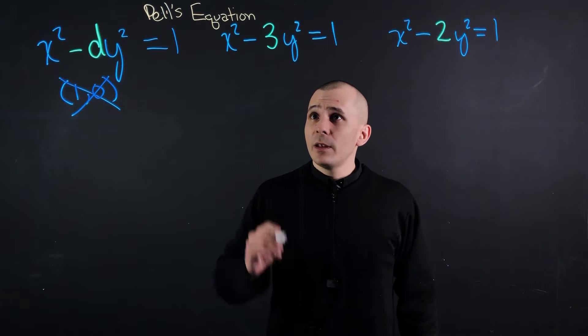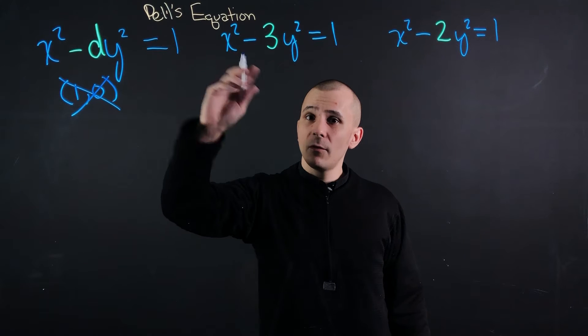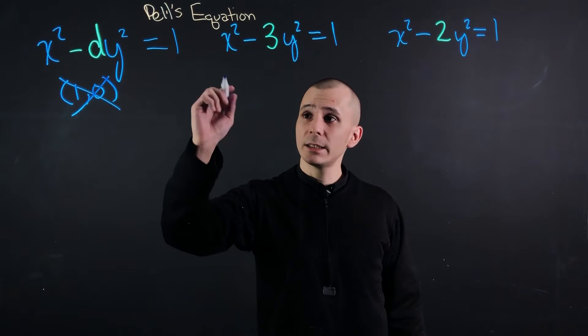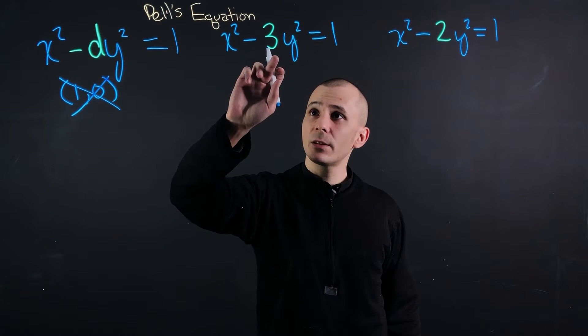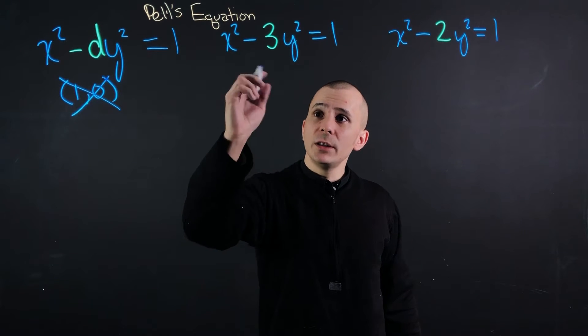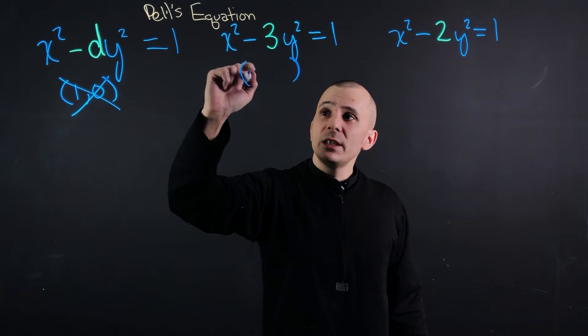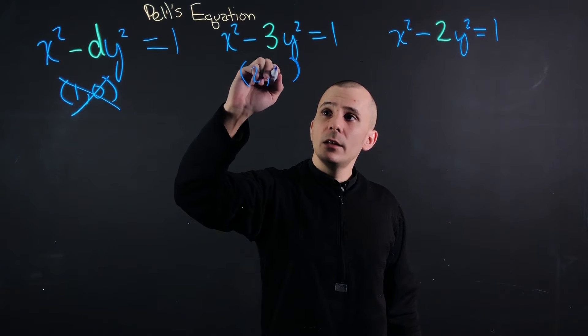If we have a 3 here, this is just going to make it a little bit easier within the arithmetic itself. If we have this 3 here, we can reformulate this entire equation after we get our first answer, which is going to be 2 and 1.